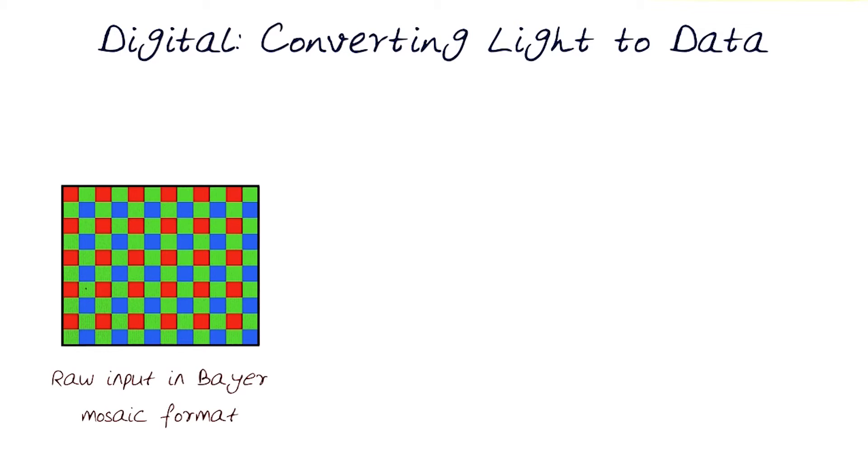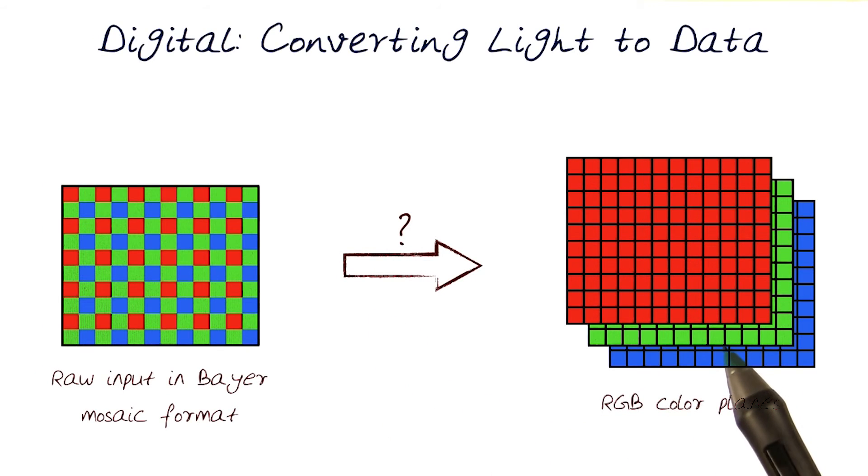One of the questions that's important is, how is the raw input in a Bayer mosaic format converted to an image? What's the process to be able to get basically the RGB color values? That is, the RGB, as we've discussed when we talked about the image processing pipeline, the three channels separated out.